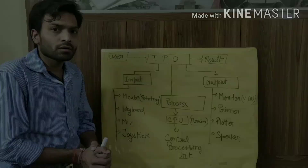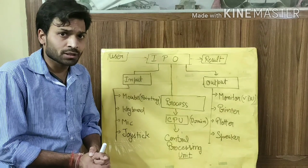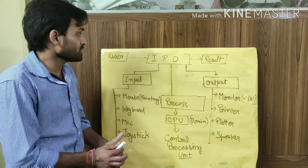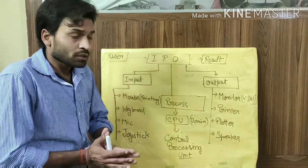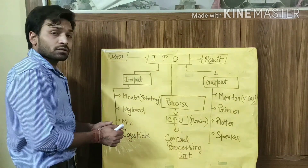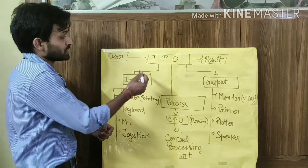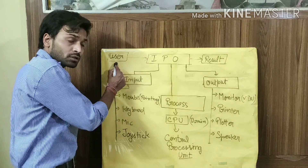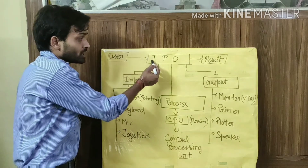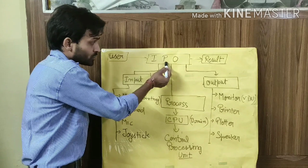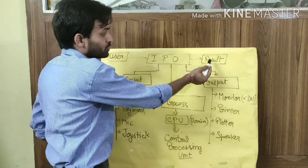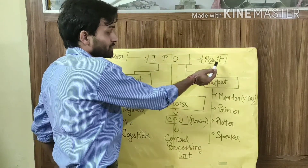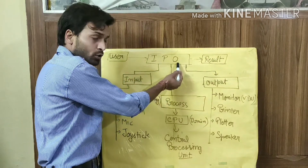Let us come to the board. I will draw a simple chart to explain the IPO cycle of our computer system. First, the computer takes input from the user using input devices, then processes it according to the set of instructions, then produces a result — and that result is called output.